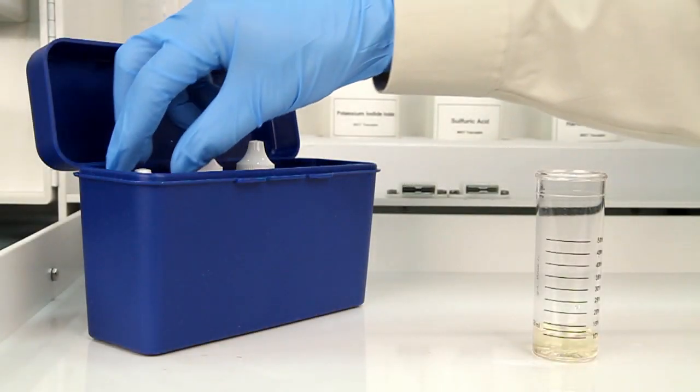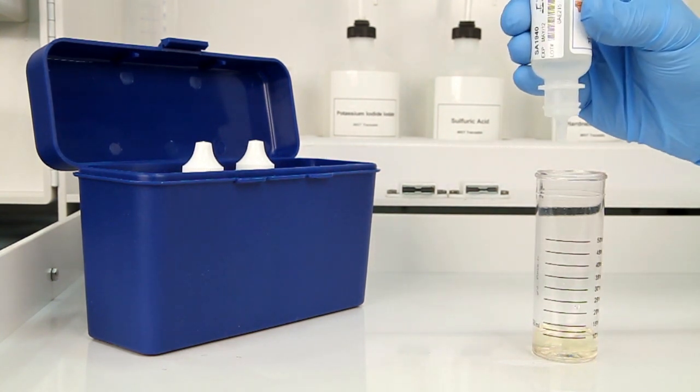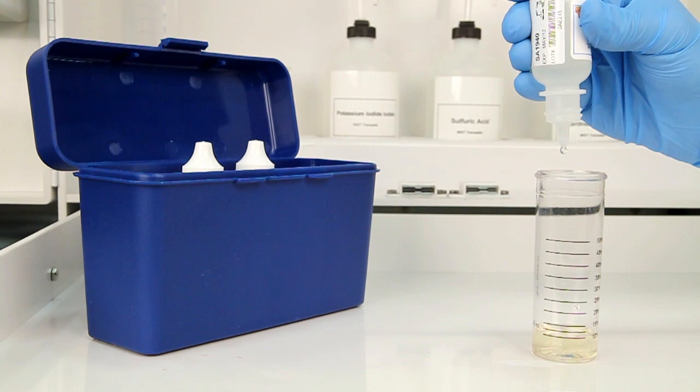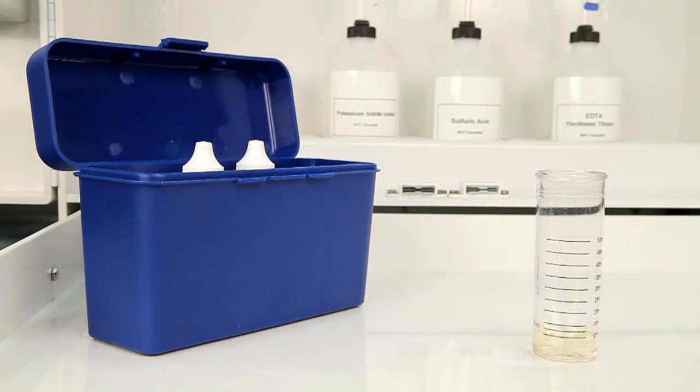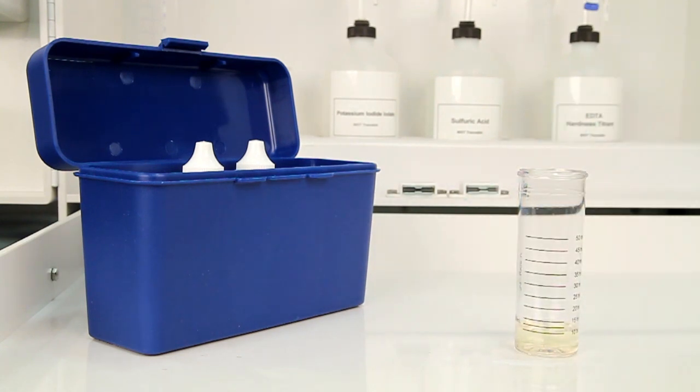Once you have collected an accurate sample, the next step is to add three drops of sulfuric acid 50%. The bottle contains a dropper tip, so it's important to hold the bottle vertically to get a consistent drop size. After the addition of each reagent, swirl the vial to make sure the sample is properly mixed.